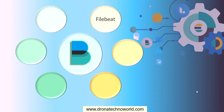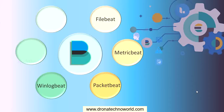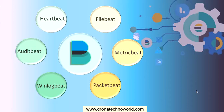Other Beats include Metricbeat, Packetbeat, Winlogbeat, Auditbeat, and Heartbeat. Metricbeat is used to collect service and system-level metrics like memory or CPU usage. Packetbeat is used to collect network data. Winlogbeat is used to collect Windows event logs. Auditbeat is used to collect audit data in Linux systems, and Heartbeat is used to monitor service uptime.